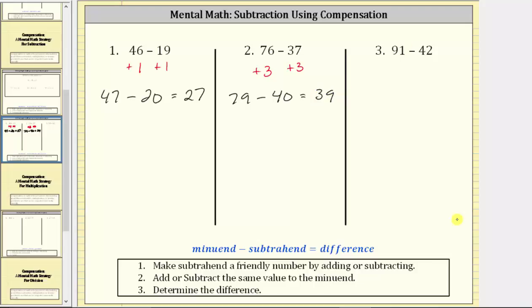For number three, we have 91 minus 42. Instead of subtracting 42, it will be easier to subtract 40, which means for the first step, let's subtract two from the subtrahend. If we subtract two from 42, we must also subtract two from 91 to create an equivalent difference.